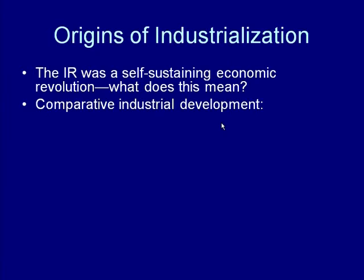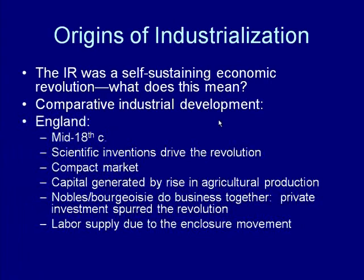If we take a look at comparative industrial development, we'll look at England first. Why did England begin to industrialize before powerhouse nations like France, Germany, Russia, or the United States? We know that in the mid-18th century England began to industrialize. Scientific inventions really drove the revolution — like the spinning jenny, which allowed textiles to be spun by machine rather than by hand. The steam engine was invented in 1712, which allowed water power to drive the spinning jenny and other machines in the factory.